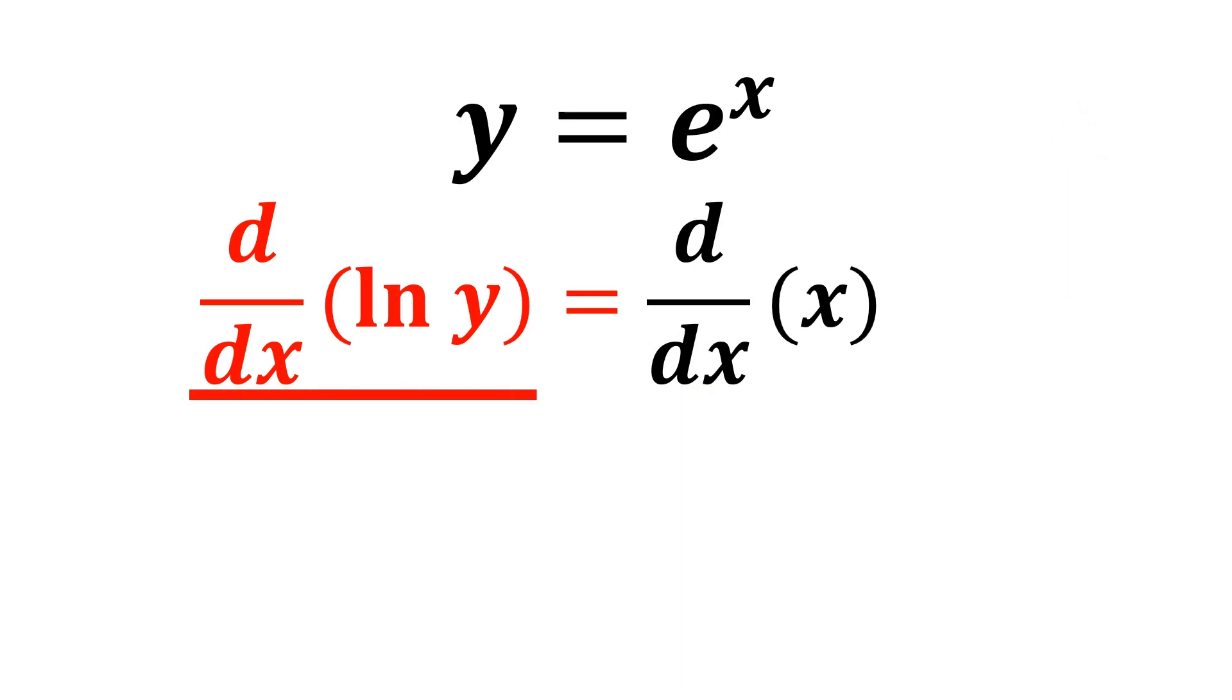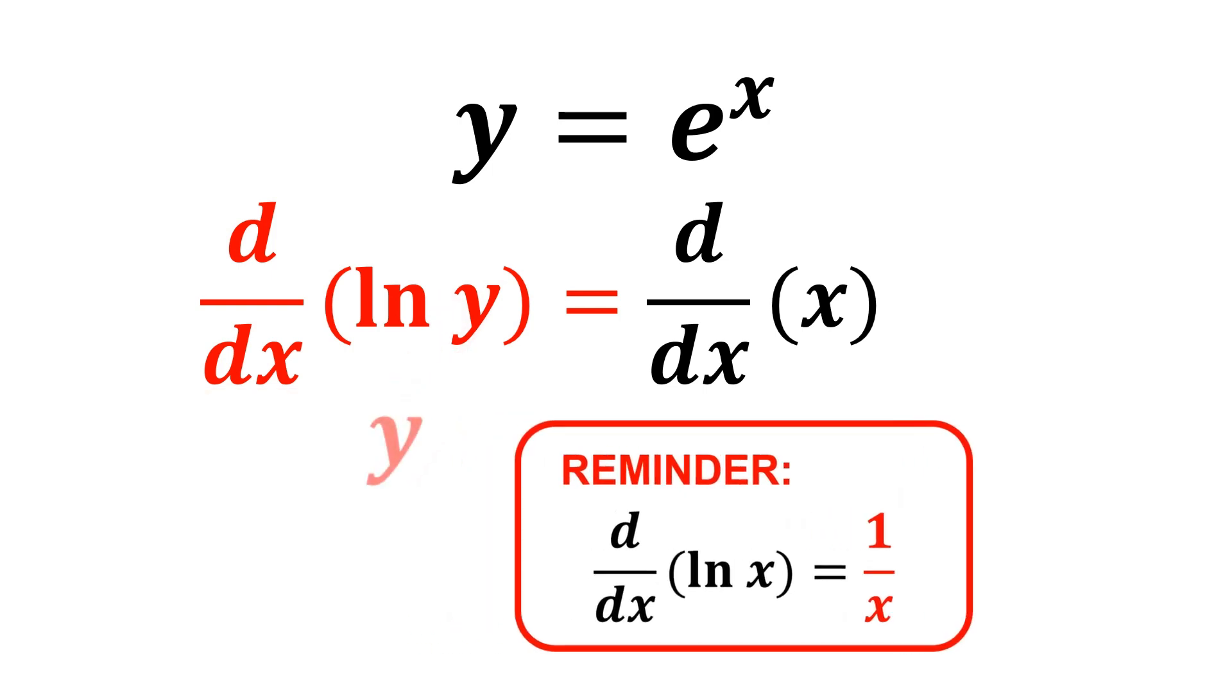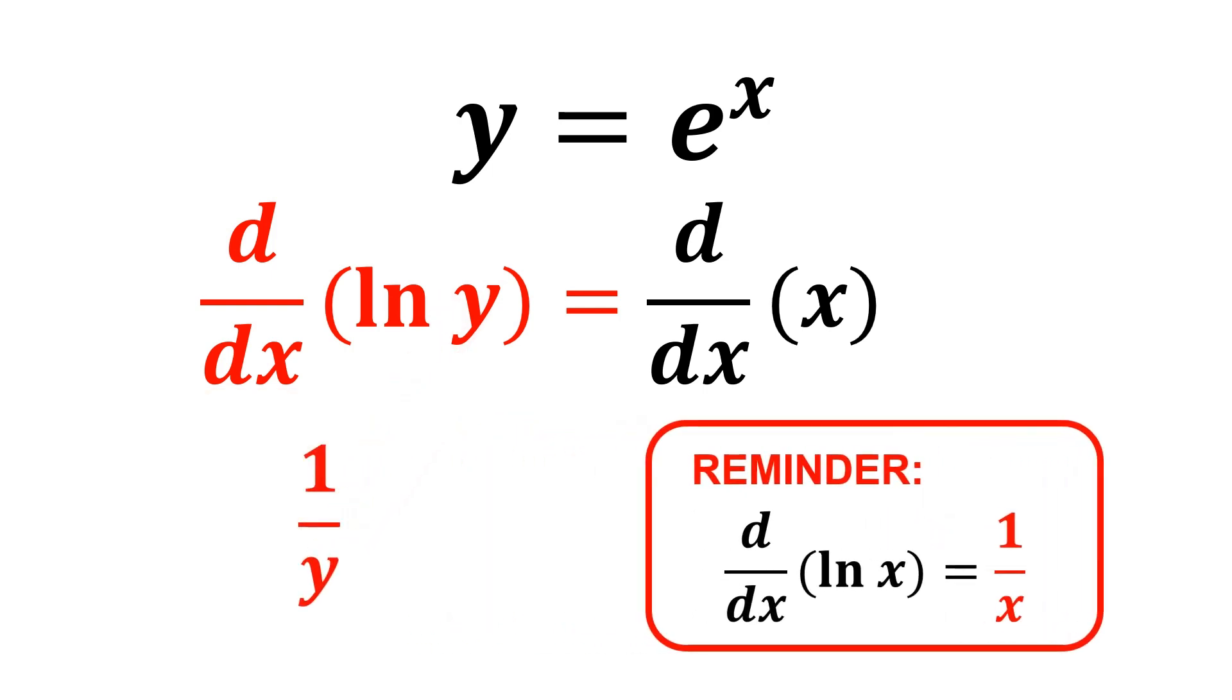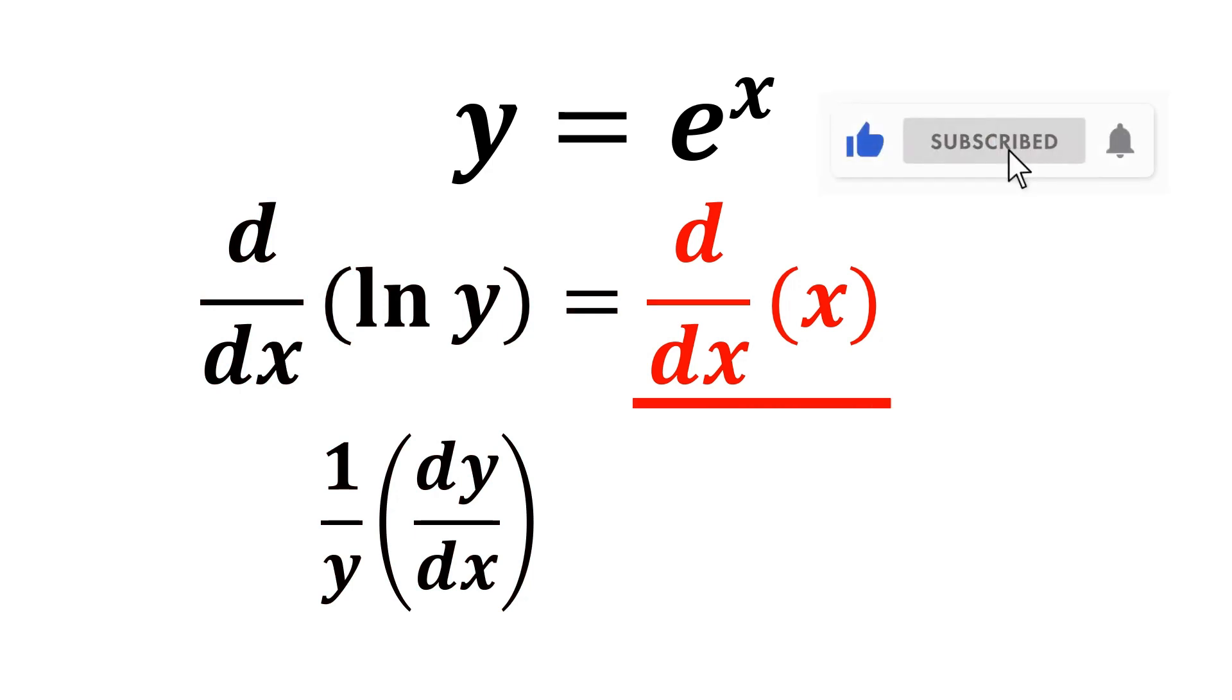Taking the derivative of ln y with respect to x. Suppose that we have ln x, and the derivative of it is 1 over x. Therefore, in this case, we will be getting 1 over y. Notice that we are taking the derivative of a term that has y inside of it, but we're differentiating it with respect to x, so we multiply it by dy dx. Taking the derivative of x, we get 1.